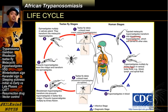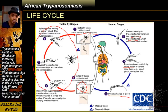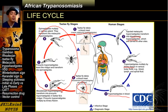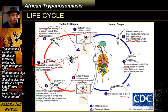Since the bloodstream trypomastigotes are circulating in blood, once another tsetse fly bites you, it ingests a bloodstream trypomastigote. Inside the vector, it undergoes additional steps in development, eventually forming another metacyclic trypomastigote situated in the salivary glands of the tsetse fly. As the tsetse fly bites another person, that person gets infected by metacyclic trypomastigotes. Please take note that procyclic trypomastigotes are not seen in humans — they are only seen in the vector. Also note that there are no amastigote stages for human African trypanosomes, compared to your Leishmania.